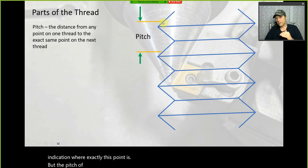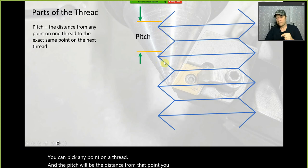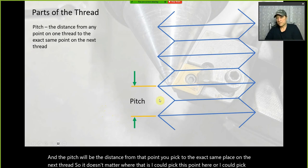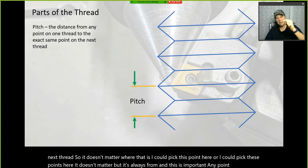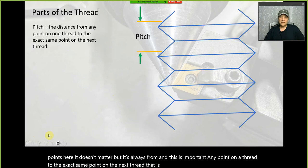The pitch will be the distance from any point you pick to the exact same place on the next thread. It doesn't matter where that point is — it's always from any point on a thread to the exact same point on the next thread. That is pitch.